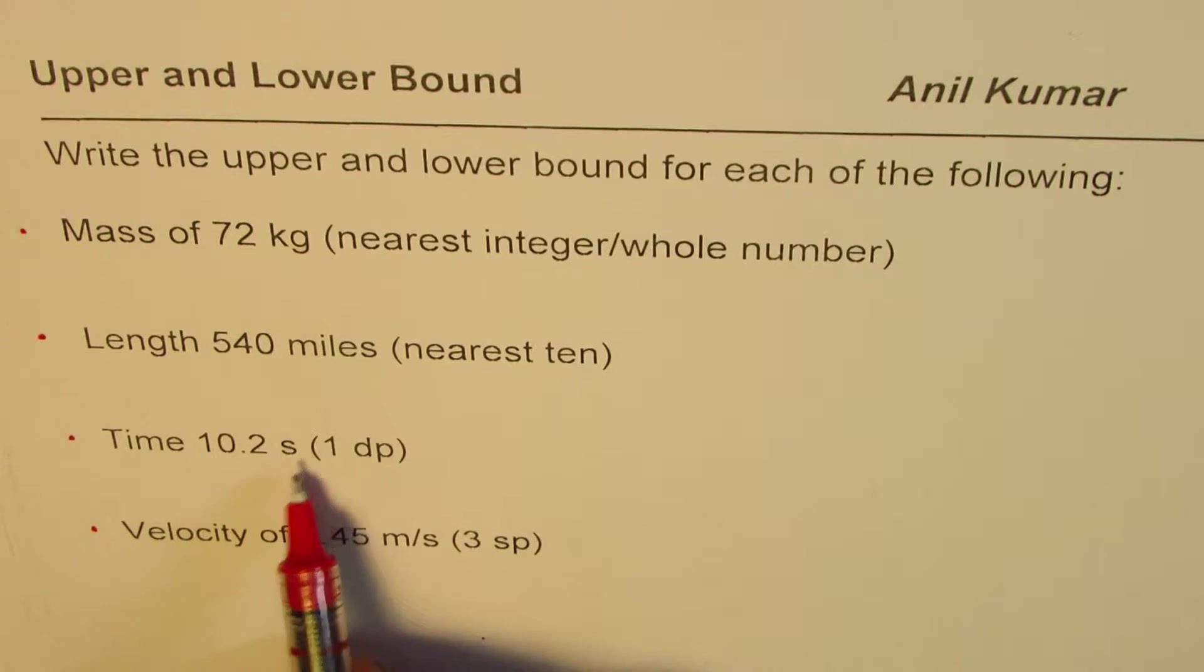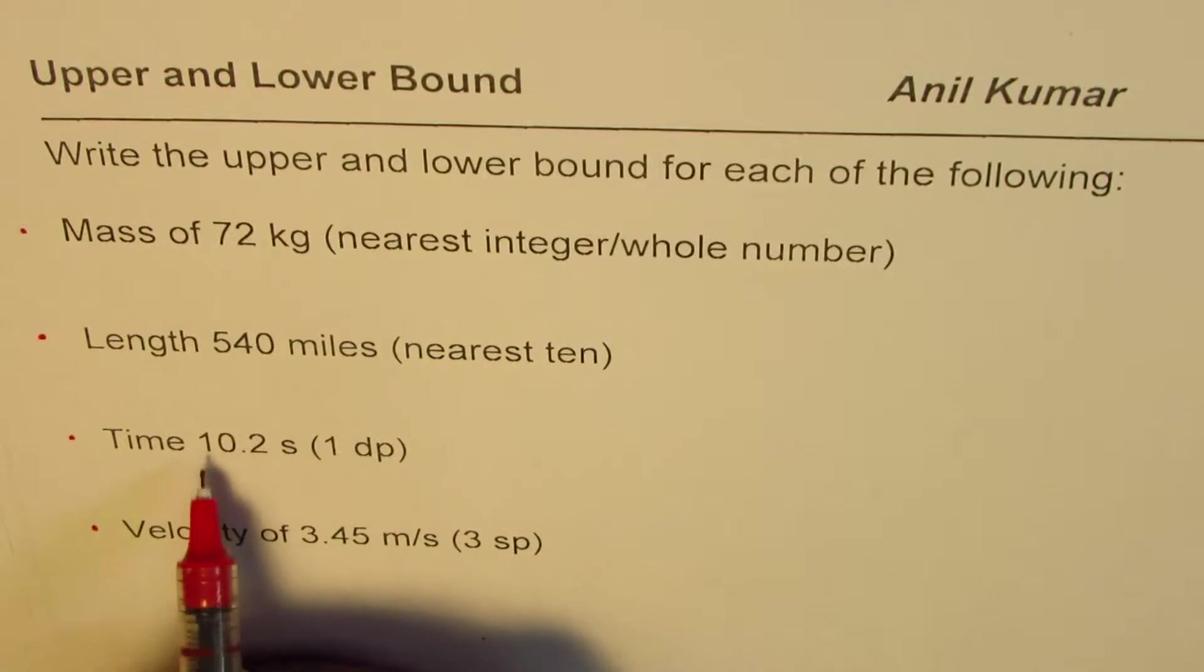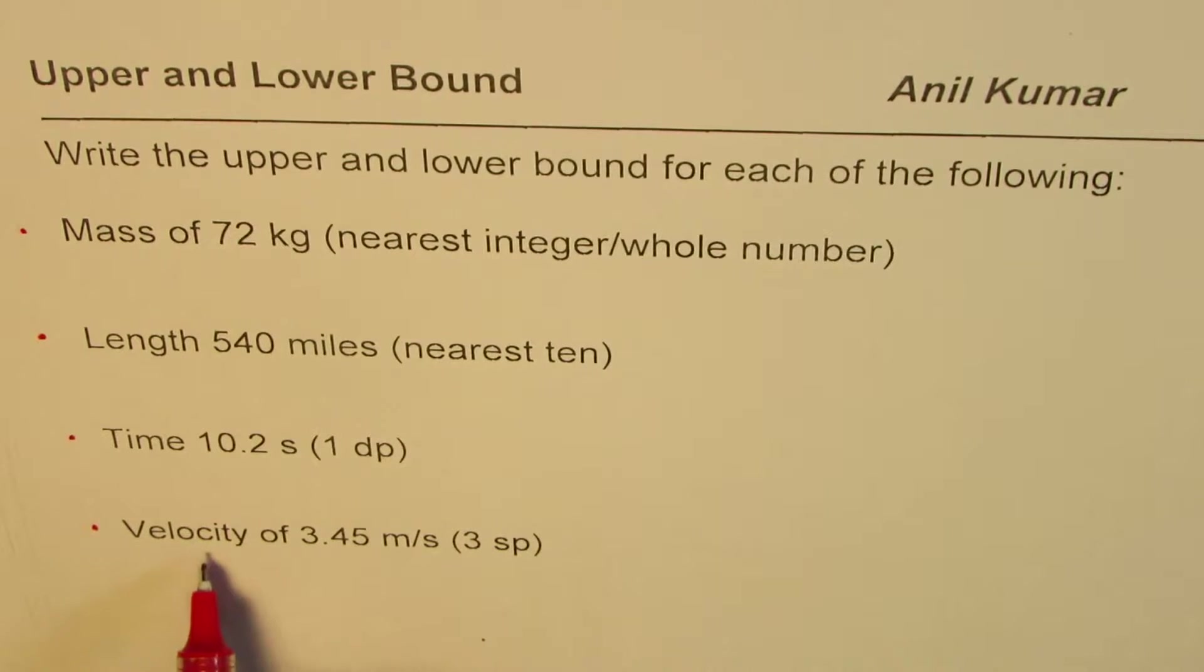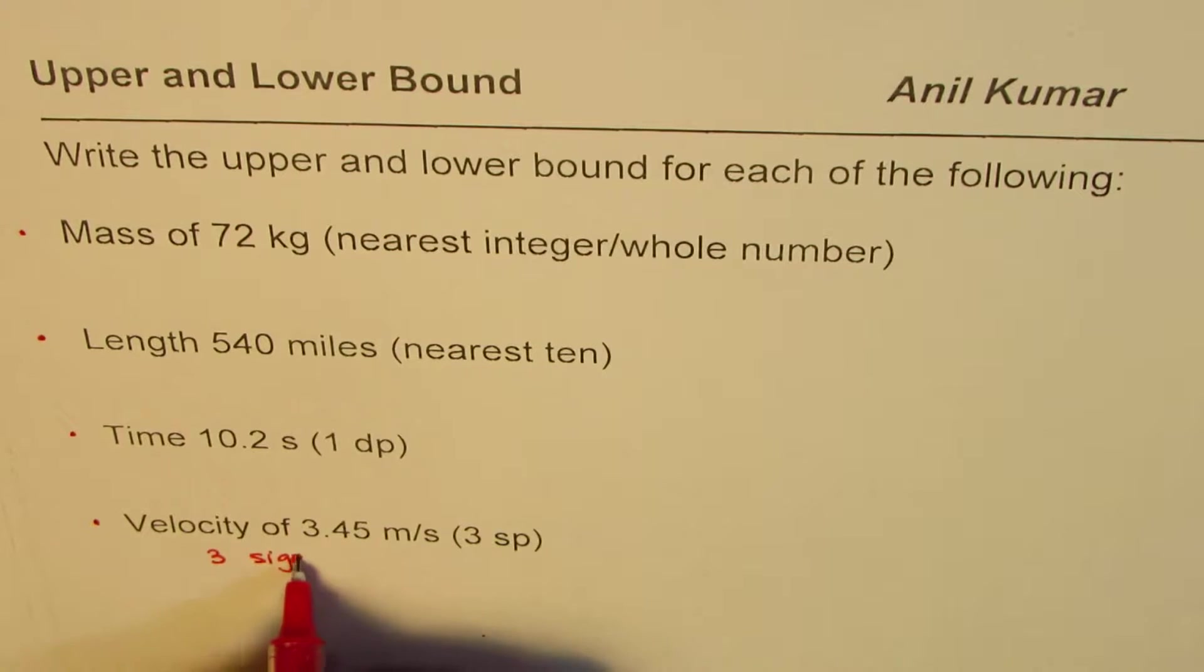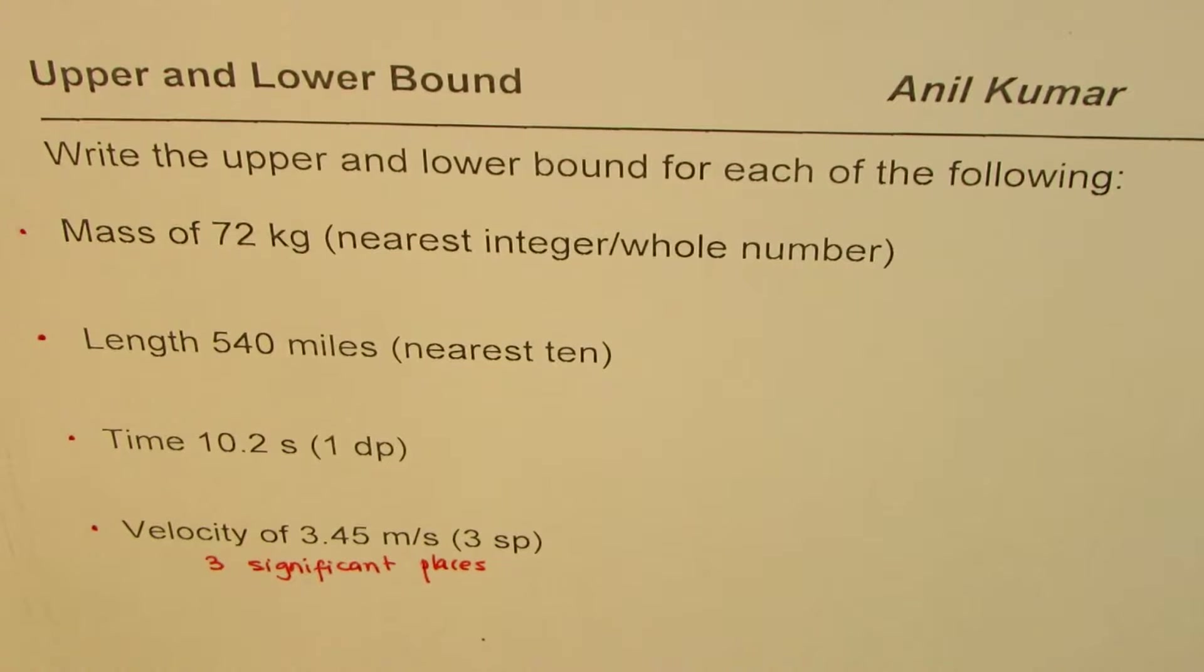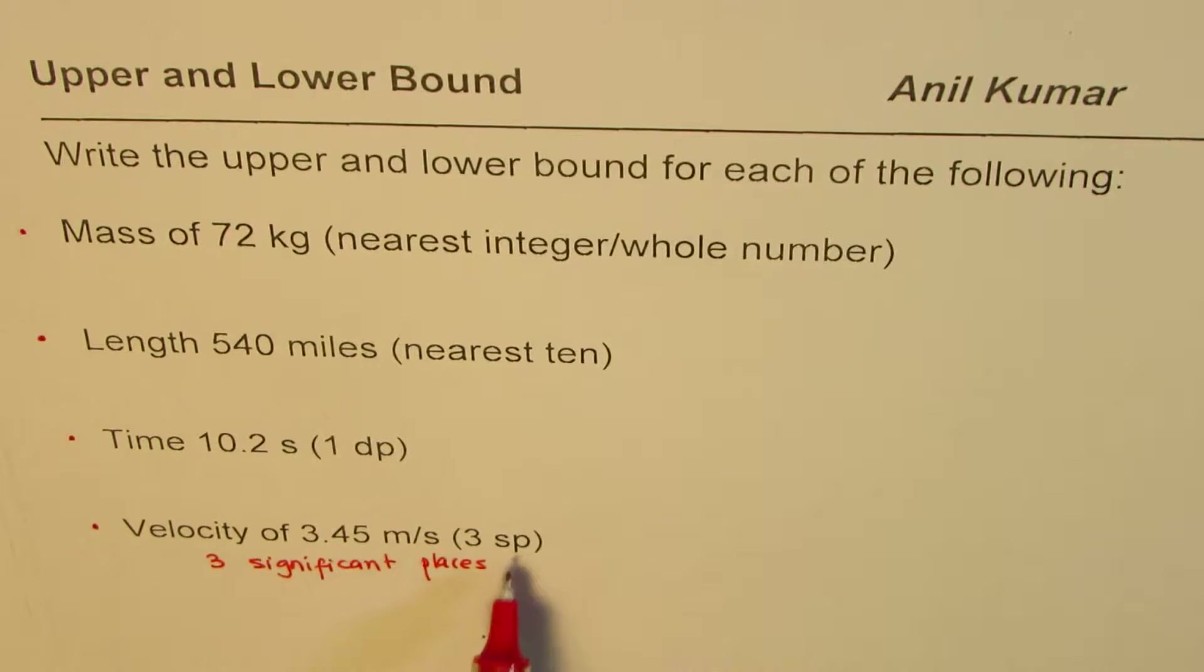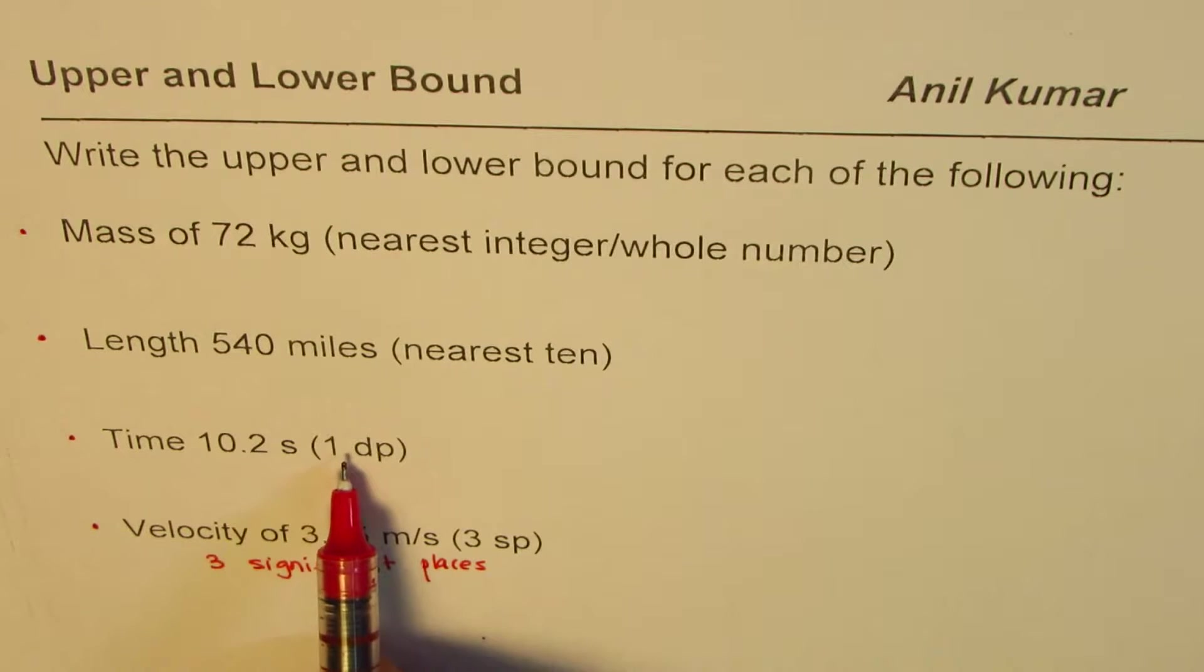Length of 540 miles is rounded to nearest tens. Time 10.2 seconds is rounded to one decimal place. At times we may write this as three significant places also: one, two, three. Velocity of 3.45 meters per second is rounded to three significant places, so that is hundredth. This is also three significant places: one, zero is one, two, and three.